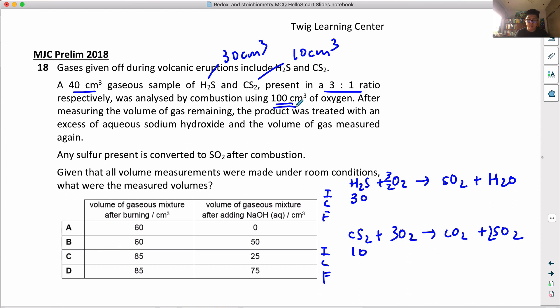It was analyzed by combustion using 100 cm³ oxygen. H2S, if it reacts, only requires 45 cm³ of oxygen, and CS2 when it reacts only requires 30 cm³ of oxygen, because the ratio is 1 to 1.5 and 1 to 3. So actually, only 75 cm³ of oxygen will be used up, which means there will be 25 cm³ of oxygen remaining.